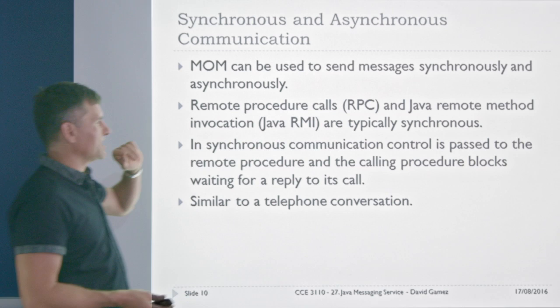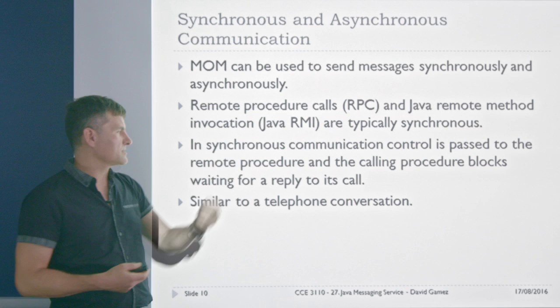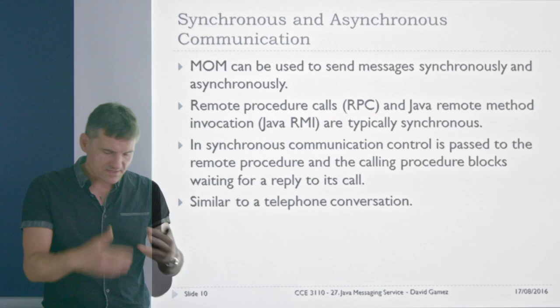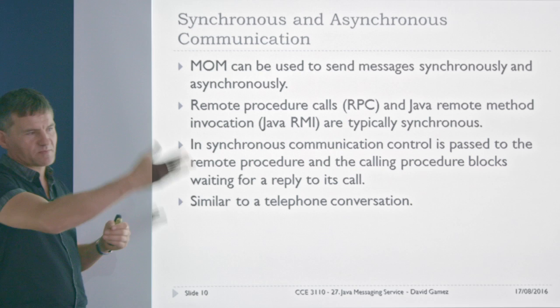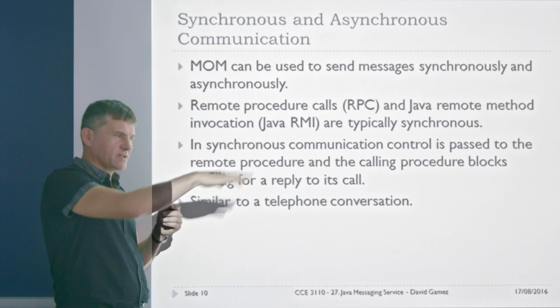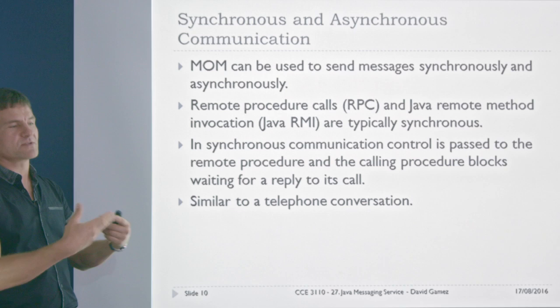In synchronous communication, you pass control to the remote procedure and the calling procedure blocks while waiting for a reply — it's a bit like a telephone conversation. The client invokes a method on the remote object, and that's a blocking call. The client sits there waiting while all the marshalling, unmarshalling, invoking the remote method, and reply being sent back over the network happens. Once that's all complete, the method returns and the client can continue its processing.